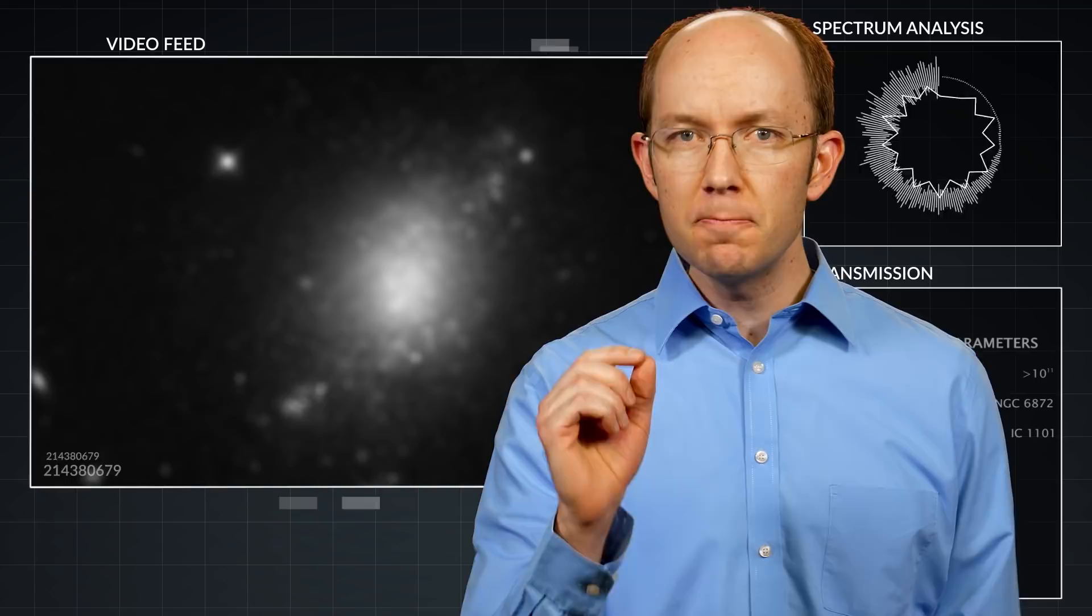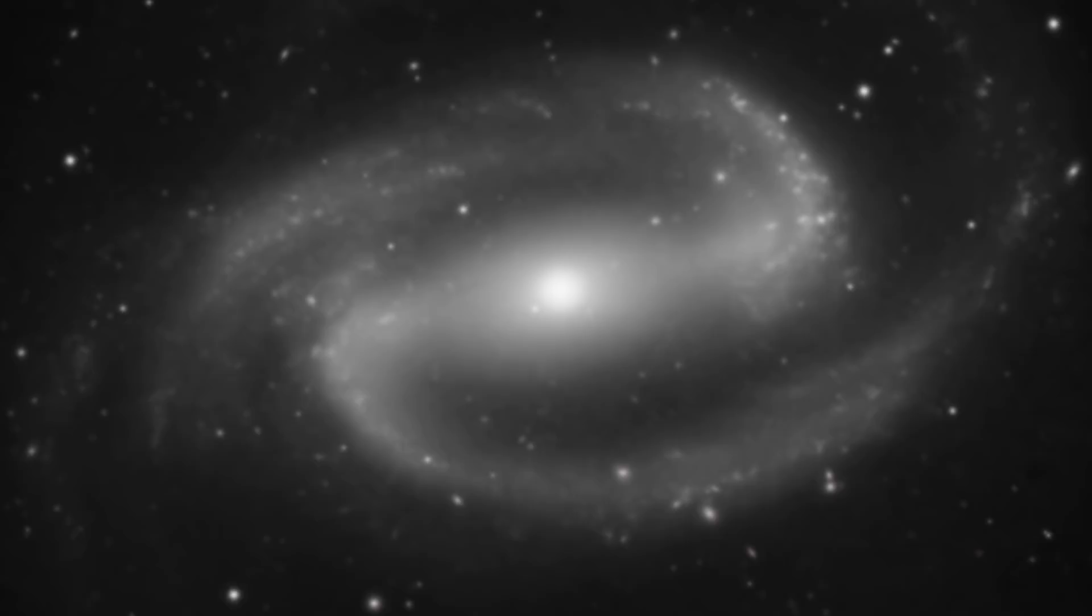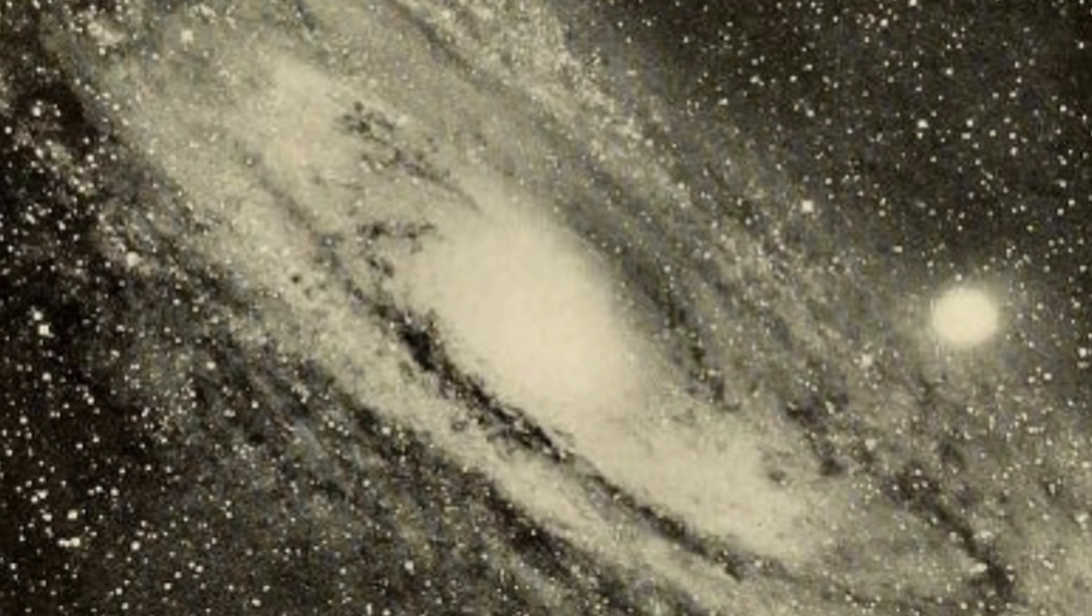Of special interest were the so-called spiral nebulas, which displayed a varying degree of overall spiral pattern within their cloudy structures. One of the largest, most studied spiral nebulas was called the Great Andromeda Nebula.